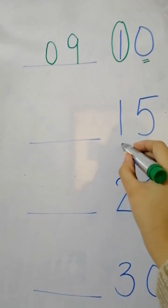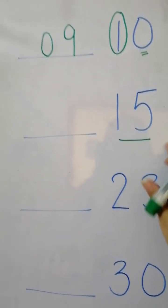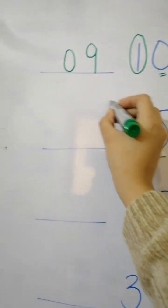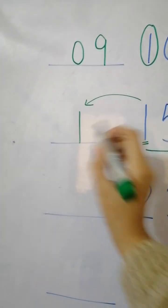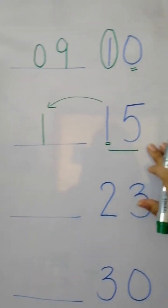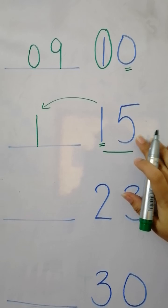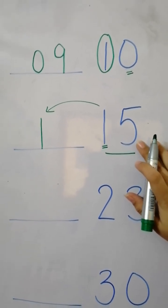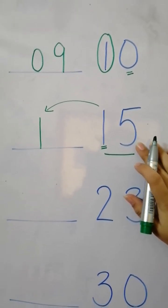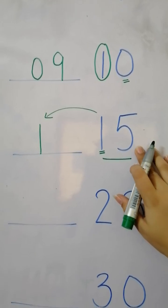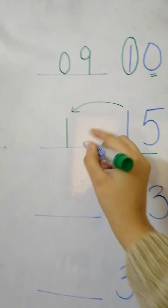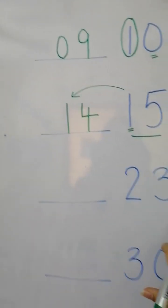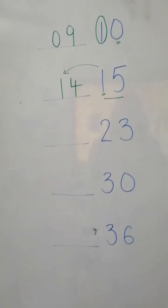Next we have 15. We don't have zero here, so we will write the first number as it is — one — and for the second number, five, we will do the before number. What comes before five? Five, four — very good, we will write four.